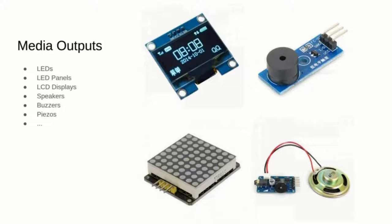Another way your microcontroller can interact with the world is by outputting multimedia signals. To output sound through a speaker or piezo, you just need a single analog pin, or you can use a single digital pin with pulse width modulation to make vintage music. You can control a single LED with a single digital pin, or use multiplexers to control an LED matrix the same way you read from a keyboard matrix. When interacting with LCD or OLED displays, you'll probably need to set up an SPI or I2C connection.